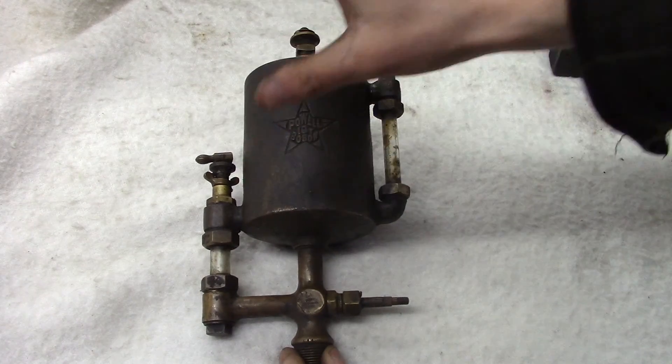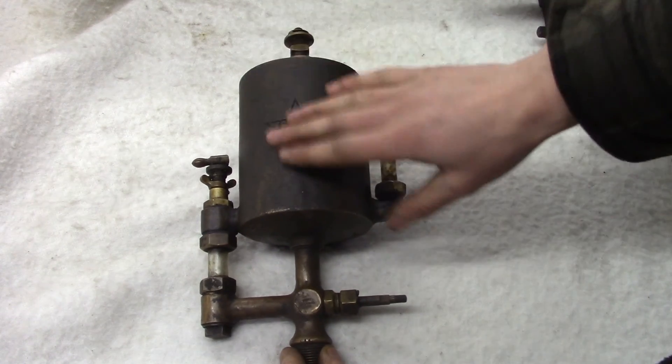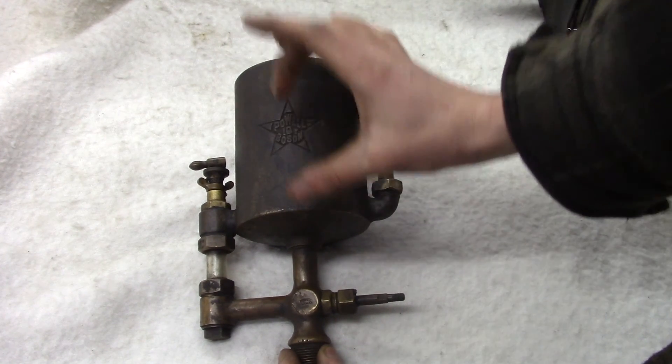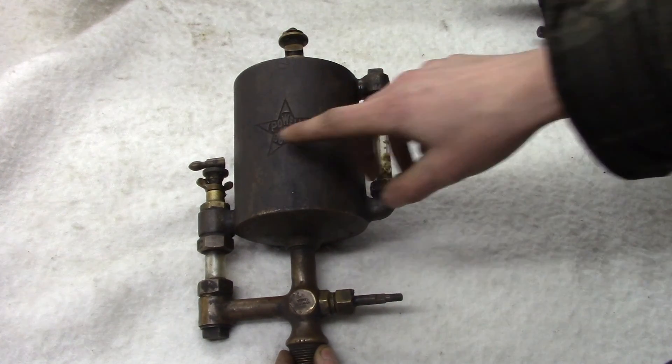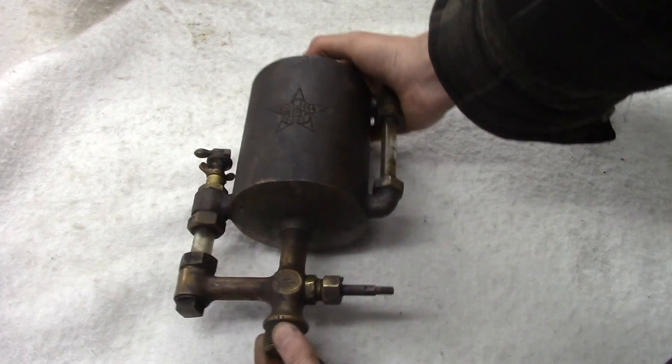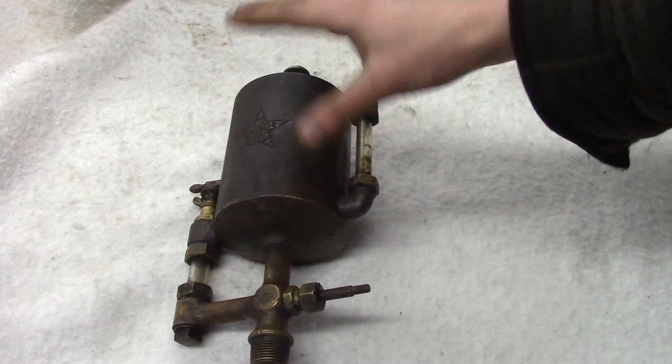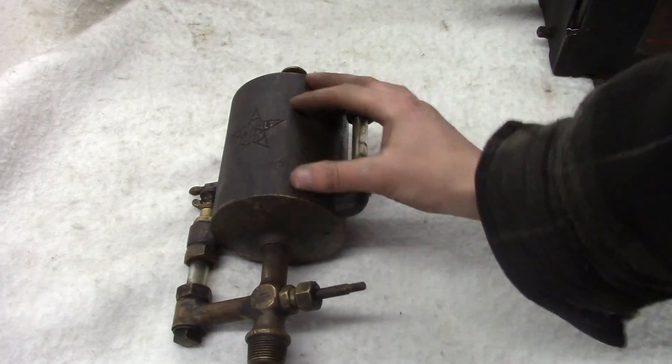Now here is the last kind of drip oiler that I'm going to tell you about. This one is the most complicated. It is a differential pressure oiler, and this particular type of oiler, this one is a Powell Boson one quart oiler.